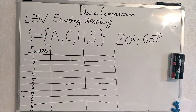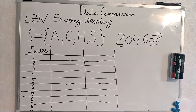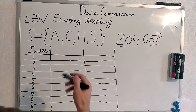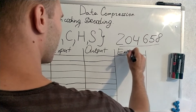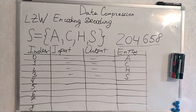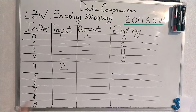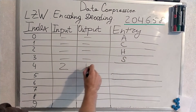I will show the example. Of course, during decoding we always know the source alphabet. This is the sequence given as input. We have placed all symbols of the source alphabet into the table starting from index 0. Now we are decoding our code stream. The first digit here will be 2. What's at entry 2? It's H. So the output is H.